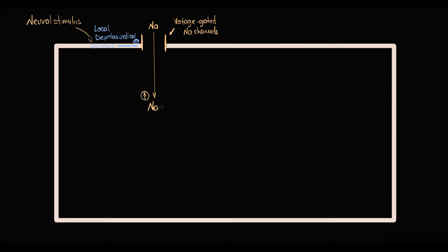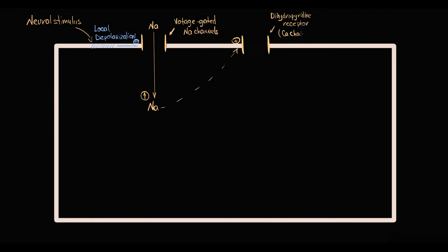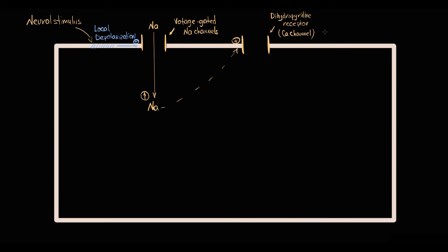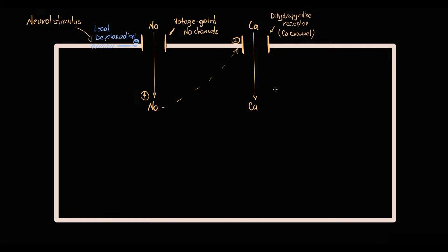Increasing intracellular sodium level causes activation of dihydropyridine receptors located on the cellular membrane. Dihydropyridine receptors are L-type calcium channels. With activation, calcium channels open, and because calcium is an extracellular ion, by concentration gradient calcium moves into the cell.